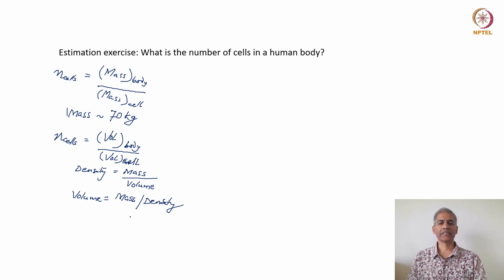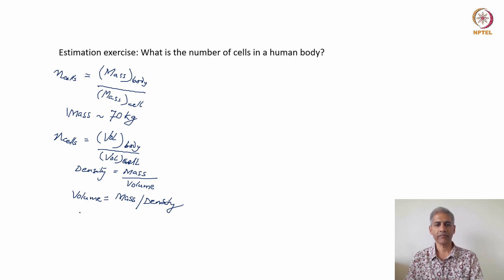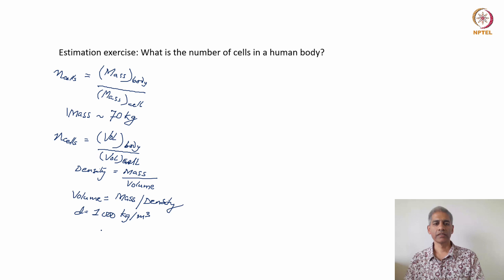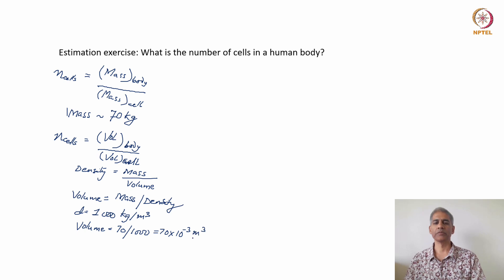What do I take the density of the human body to be? Thinking of the fact that we are primarily comprised of water, I'll assume the density of the human body is that of water — so density d becomes 1000 kilograms per meter cubed. Working in SI units, the volume becomes 70 divided by 1000, which is 70 × 10⁻³ meter cubed. There I have the volume of a human body.